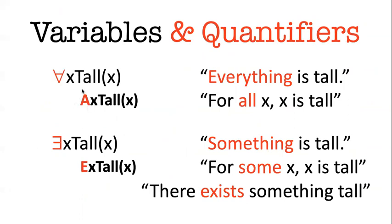In your homework, I want you to always use the letter A. Type the letter A for all and type the capital letter E for exists. So when I say exists X tall X, that just says something is tall or there exists something tall. There's many ways in English of making quantity claims, and so these quantifiers are going to be able to translate a whole bunch of different types of English expressions.